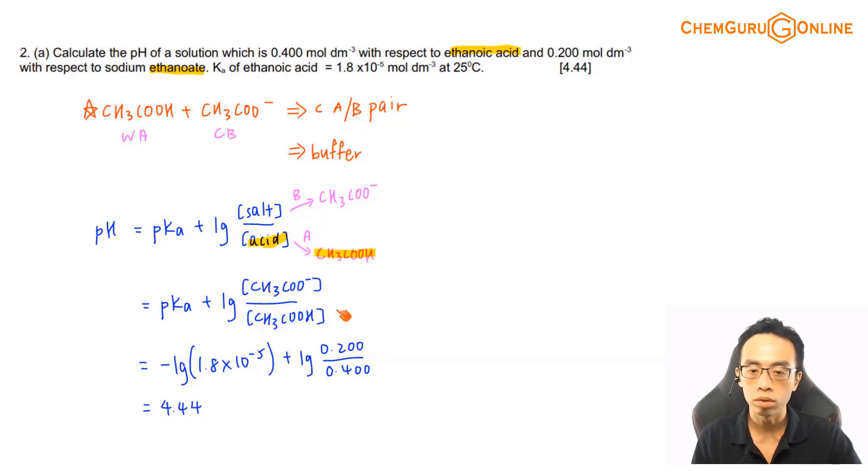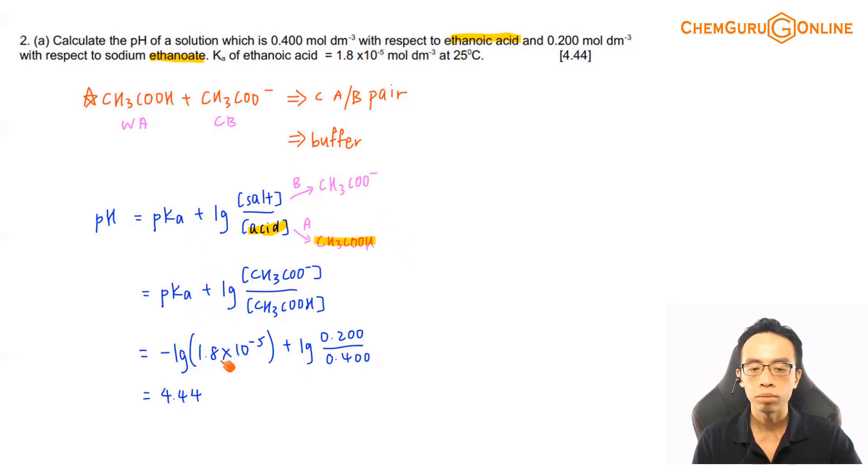So my suggestion is always focus on the denominator, the acid will not give me any problem. Acid is at the bottom, the conjugate base will be the numerator. Then I just substitute, Ka value is 1.8 times 10⁻⁵, the ratio for your conjugate base to acid, 0.2 divided by 0.4, I will get the pH equals to 4.44.